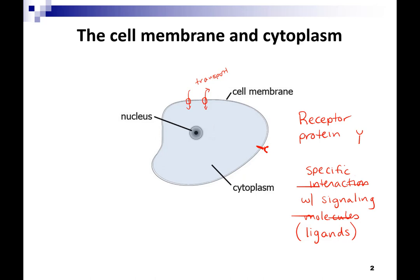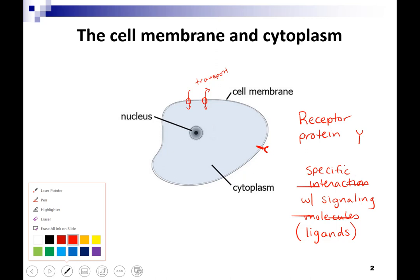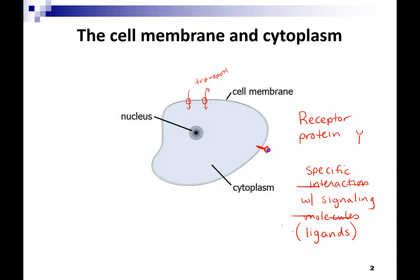When we draw a receptor protein that's transmembrane, what we're showing is that there is a chemical connection between the outside of the cell and the inside of the cell. There can also be intracellular receptors — receptors inside the cell that receive a signal from a molecule moving inside the cell. We'll talk about examples of these.